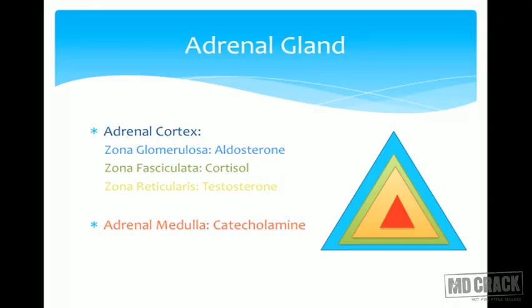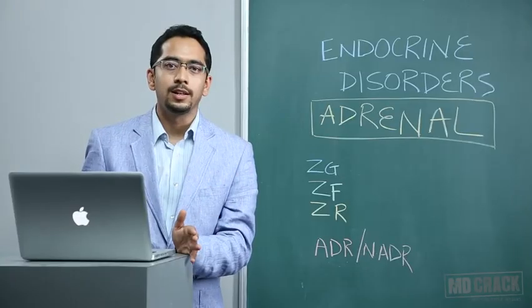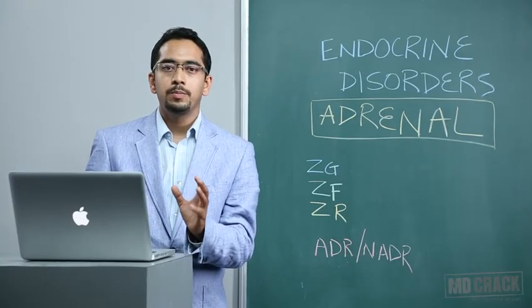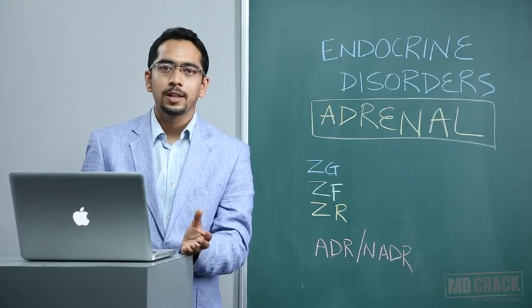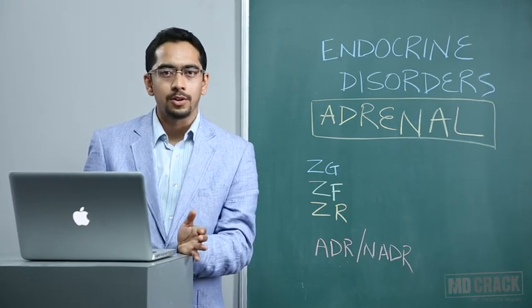The adrenal medulla, which comprises almost one-tenth of the adrenal gland, is responsible for production of various catecholamines — chemicals derived from tyrosine. Tyrosine gives rise to dopa, then dopamine, noradrenaline, and adrenaline. The predominant secretion of the medulla is adrenaline and, in some quantities, also noradrenaline.